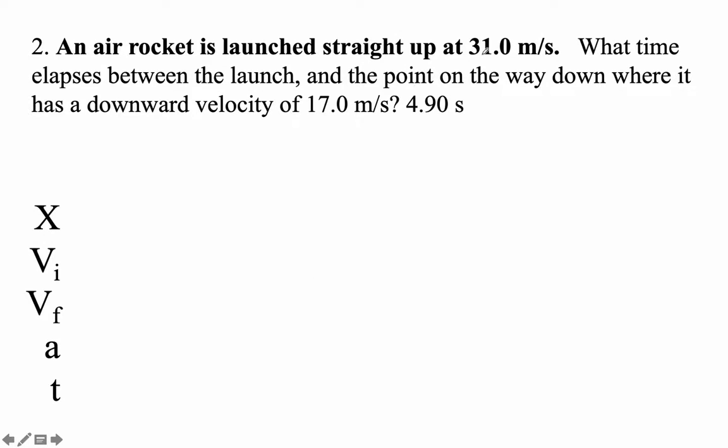An air rocket is launched straight up at 31 meters per second. What time elapses between the launch and the point on the way down where it has a downward velocity of 17 meters per second?